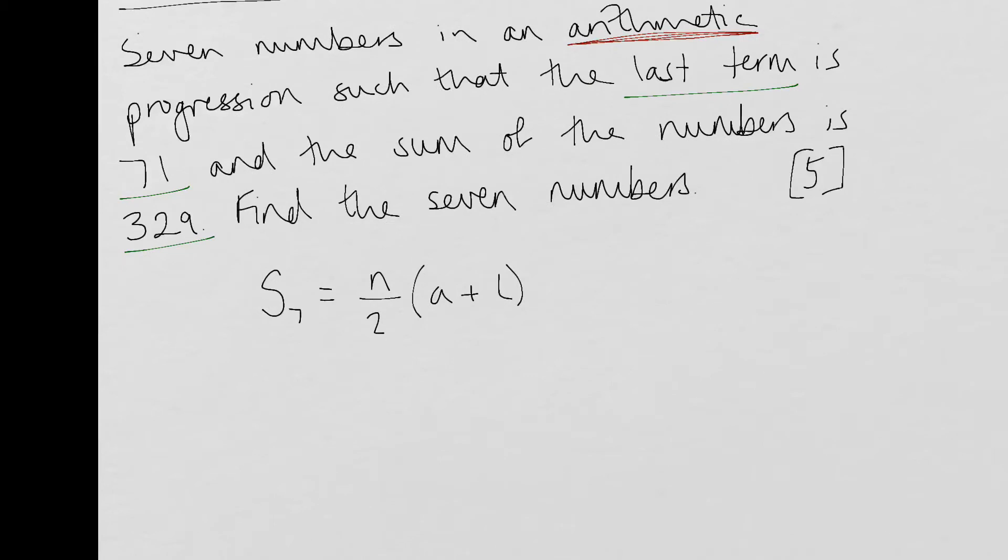So I know that the sum of the seven numbers is 329 because I've been told that. I know that the last number is 71 because I've also been told that. And I know that the number of numbers that I'm looking for or the total of is seven. So if I substitute those values in, I've got 329 is equal to seven over two, A plus 71.